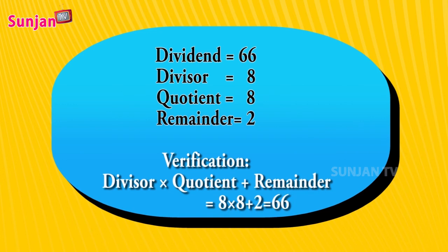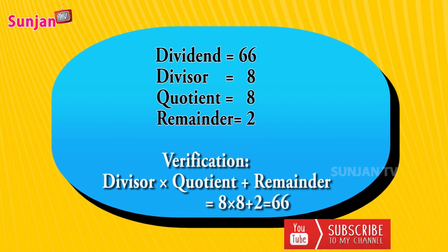Dividend equals 66, divisor equals 8, quotient equals 8, remainder equals 2. Verification: divisor times quotient plus remainder equals 8 times 8 plus 2 equals 66.